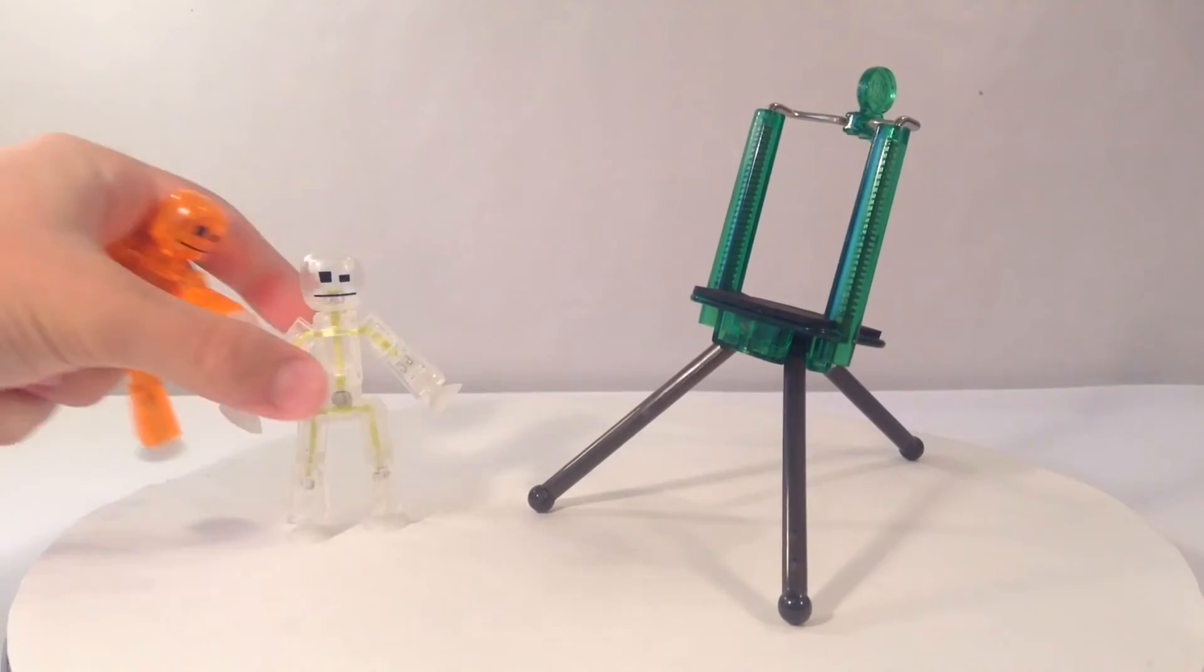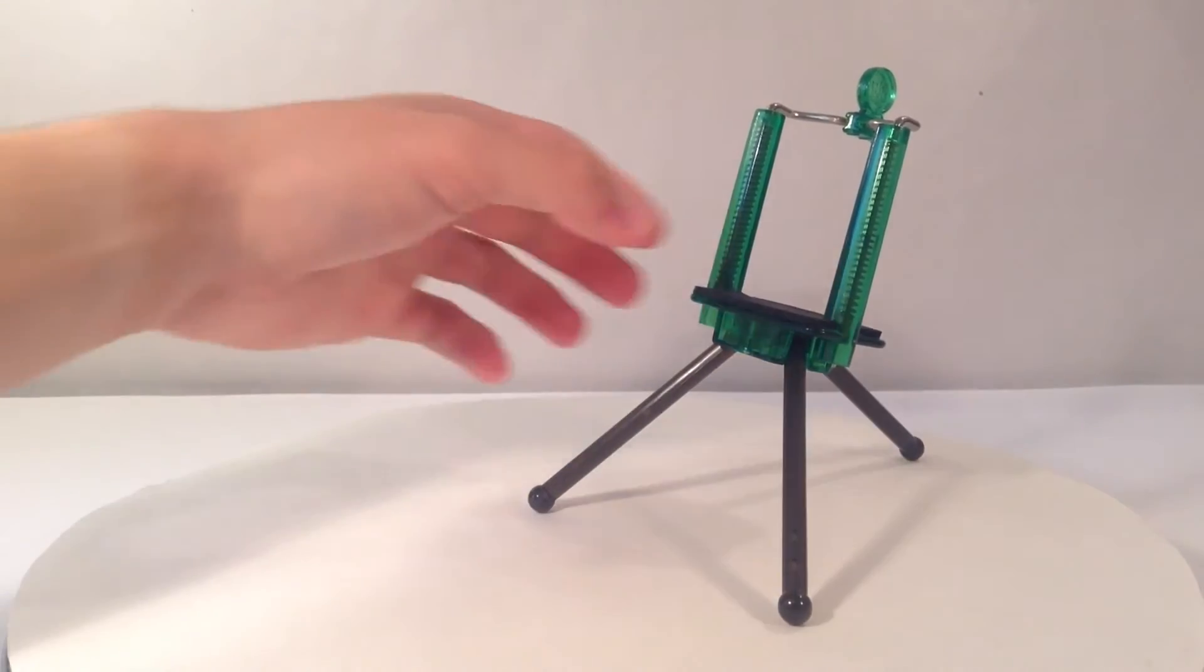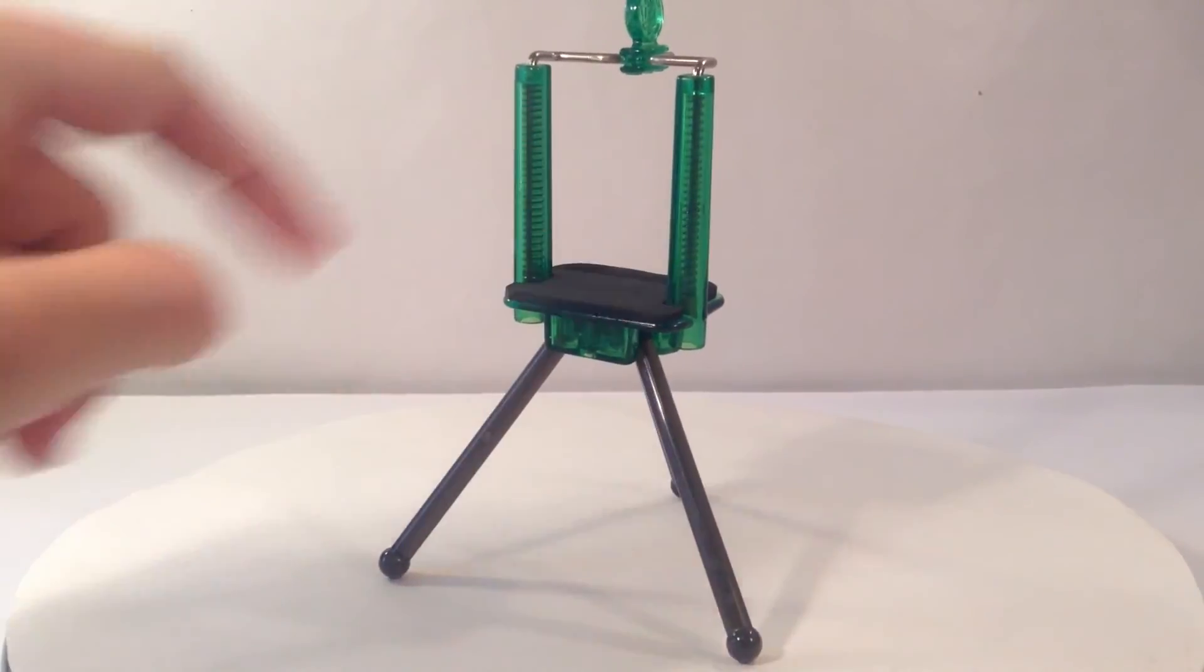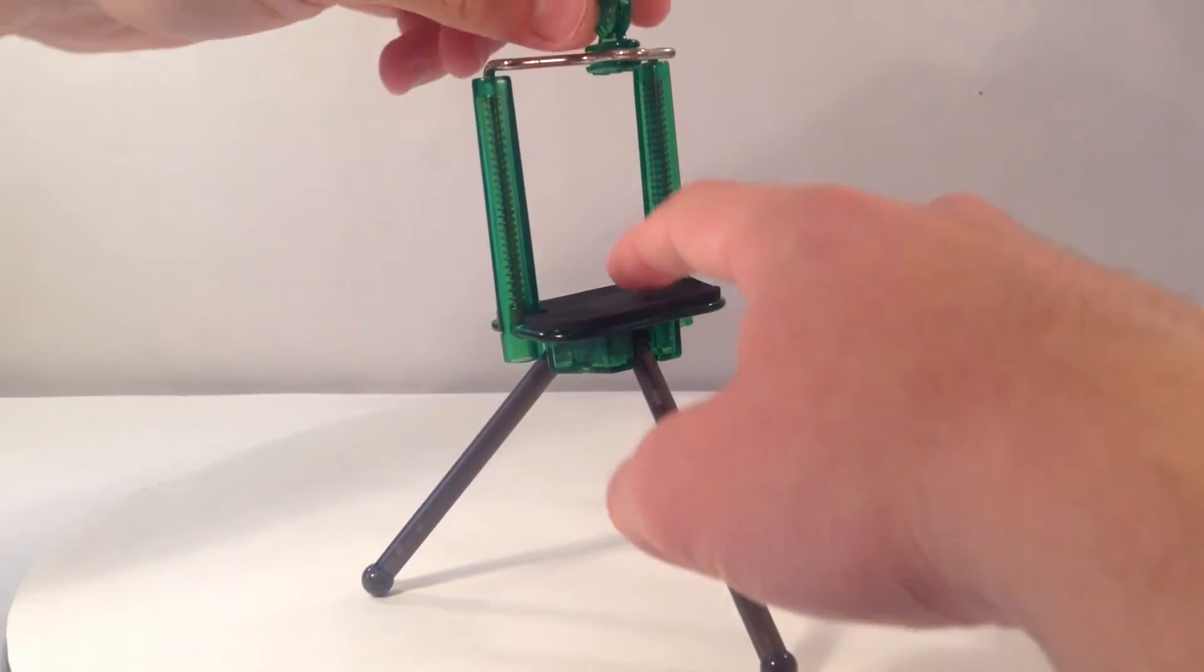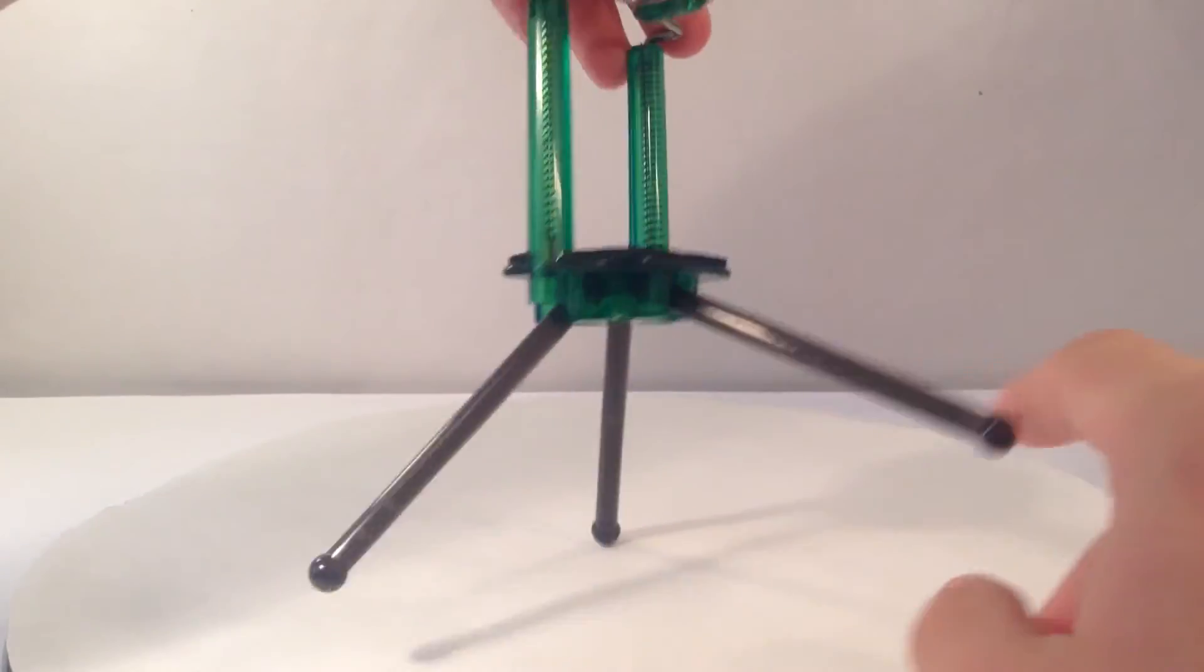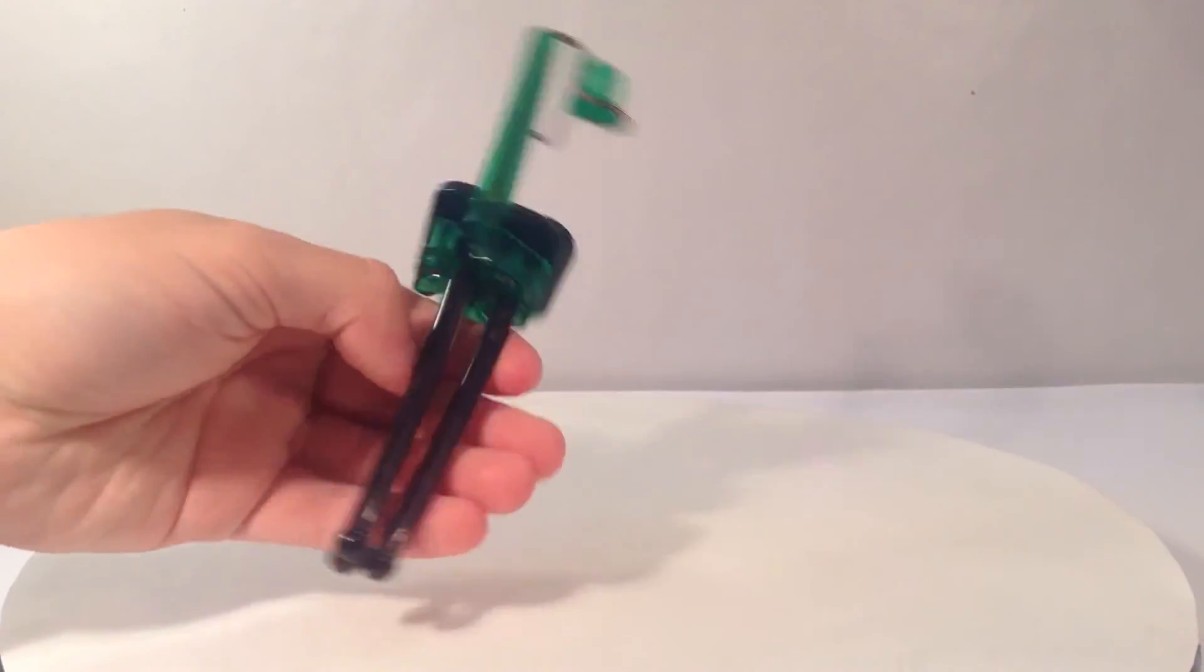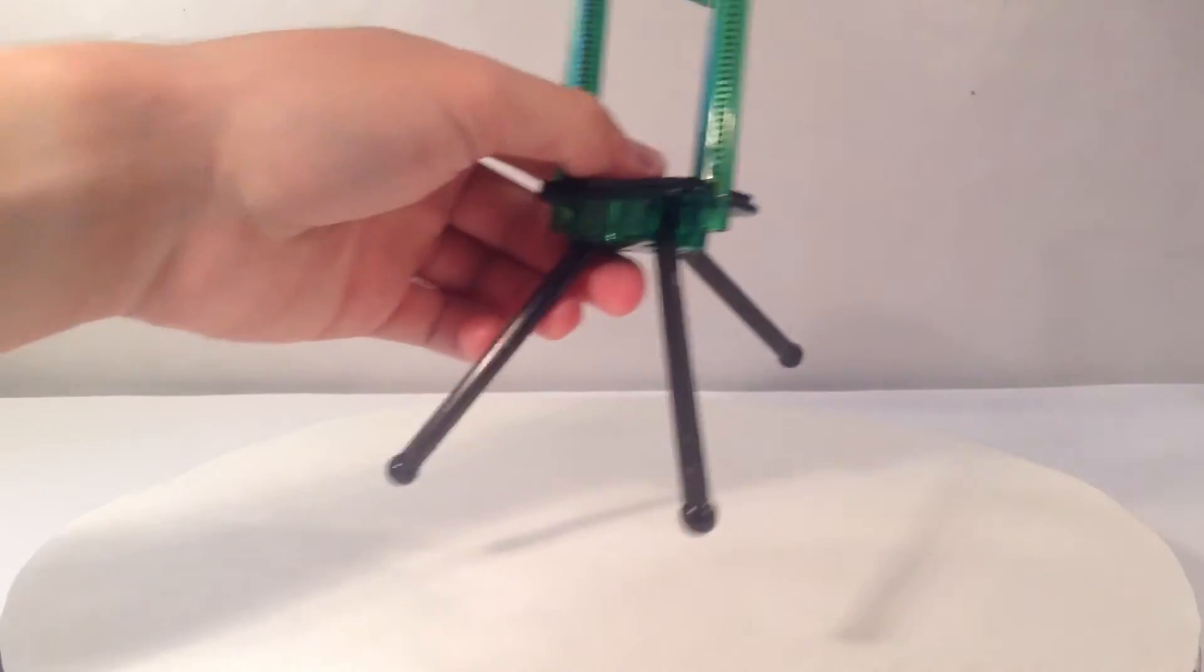So that is it for the Stickbots. But this set also includes a tripod, which is actually pretty cool. And it's got these three legs. Pretty, yeah, pretty durable actually. And then you got the place where you can pull up and insert your smartphone. So there is the transportable, very easy to carry around Stickbot Studio tripod.